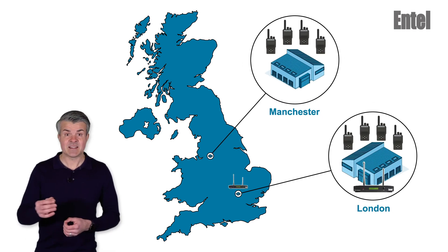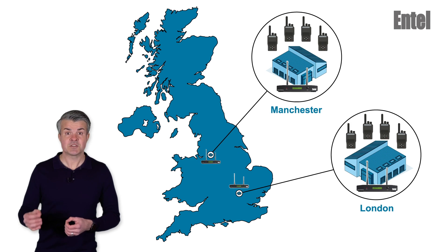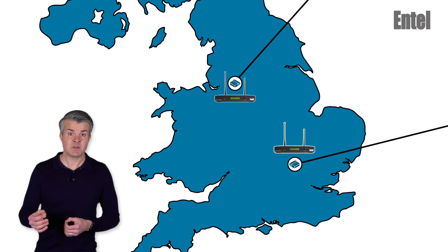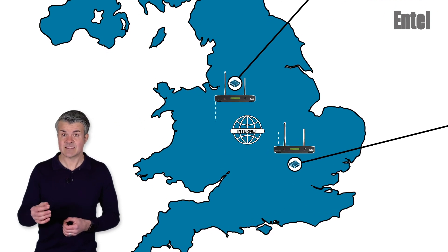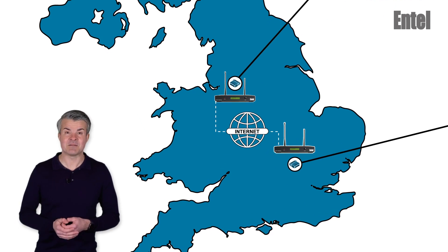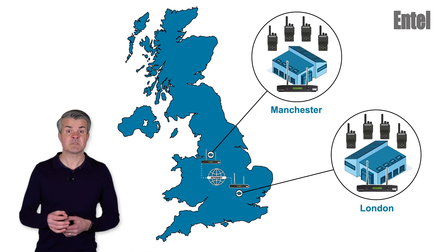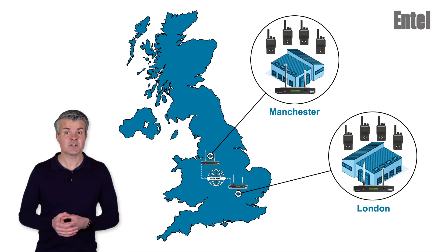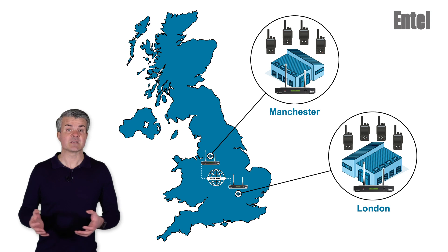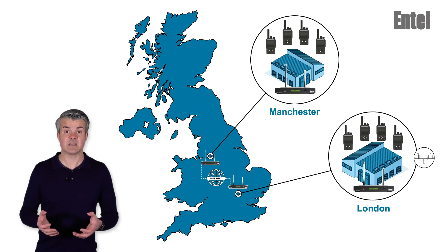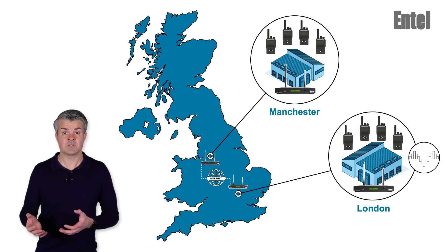By simply adding an Intel gateway at each site, the two sites are simply and cost-effectively linked together. Further still, the gateway can connect radio systems of different technologies. For example, London may be using digital radios and Manchester analogue.